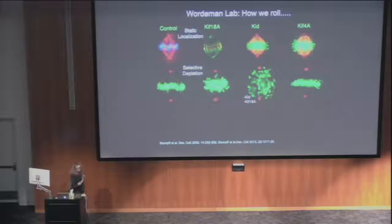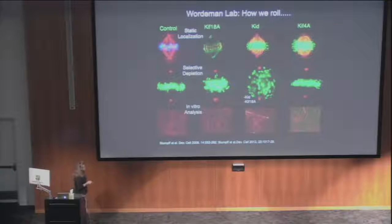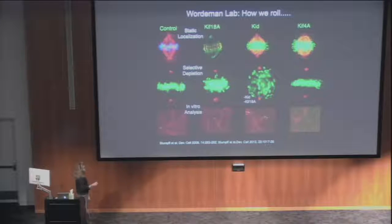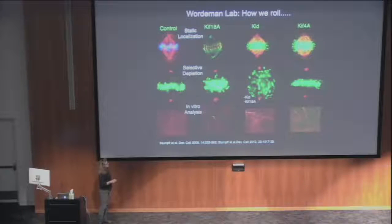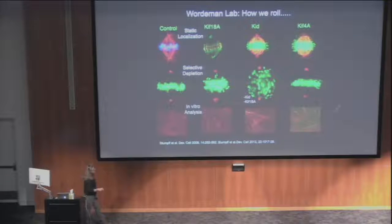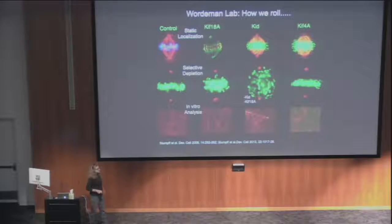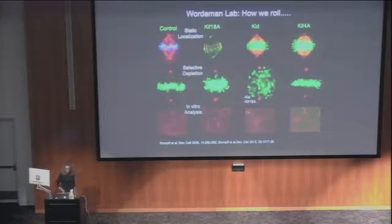Sometimes we need to knock down a couple of motors at the same time. When we knock down both KID and KIF18A, we found we could completely eliminate all directional cues for the chromosomes in the spindle. The fun thing about working on motor proteins is that you can learn a lot by looking at them under the microscope. We use TIRF microscopy to look at individual dynamic microtubules. This is one microtubule — you can tell its polarity because tubulin has been assembled off either side of a dark seed. We add motor proteins and determine what they do when they reach the end of the microtubule — whether they change dynamics, what direction they move, and whether they affect dynamics. This is a plus-end directed motor, and when it gets to the end of the microtubule, it also affects dynamics.